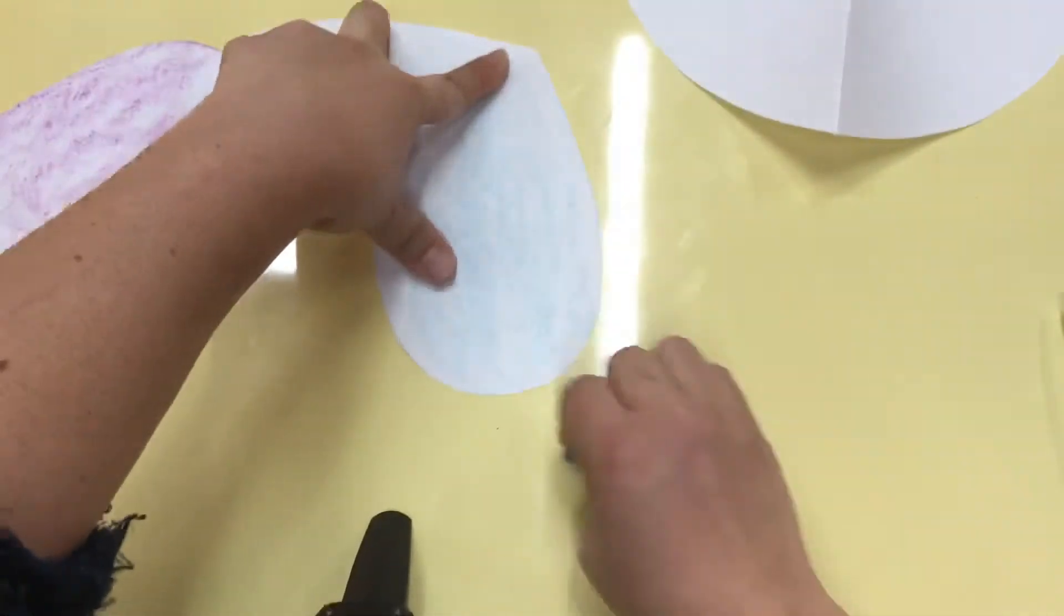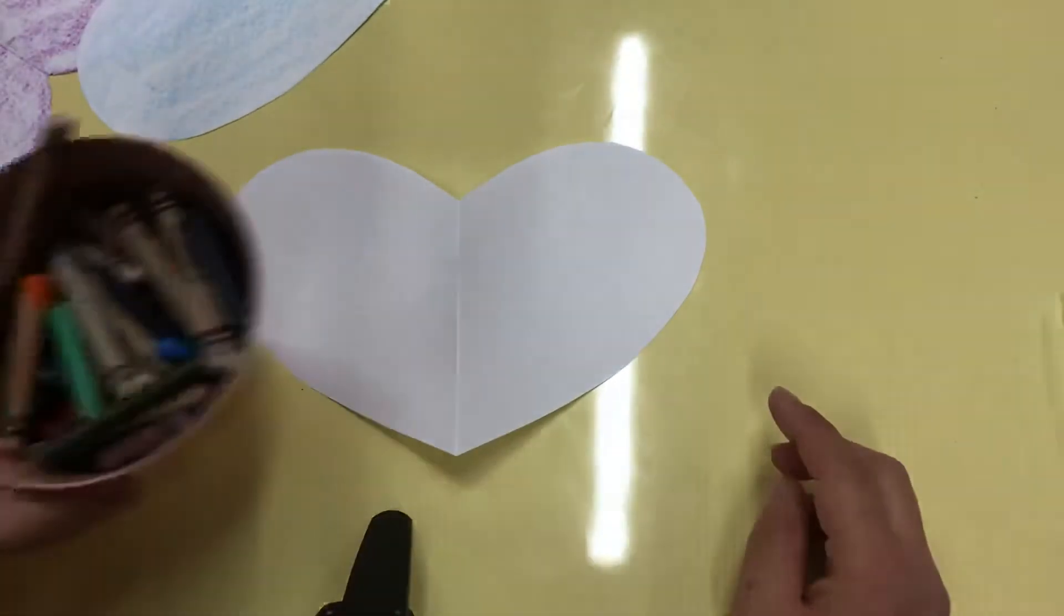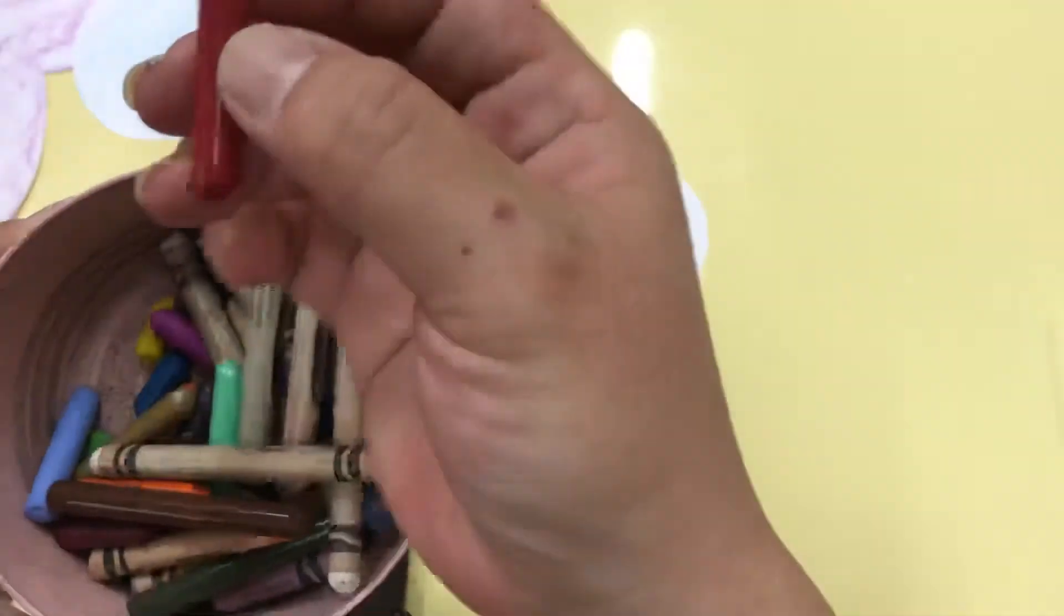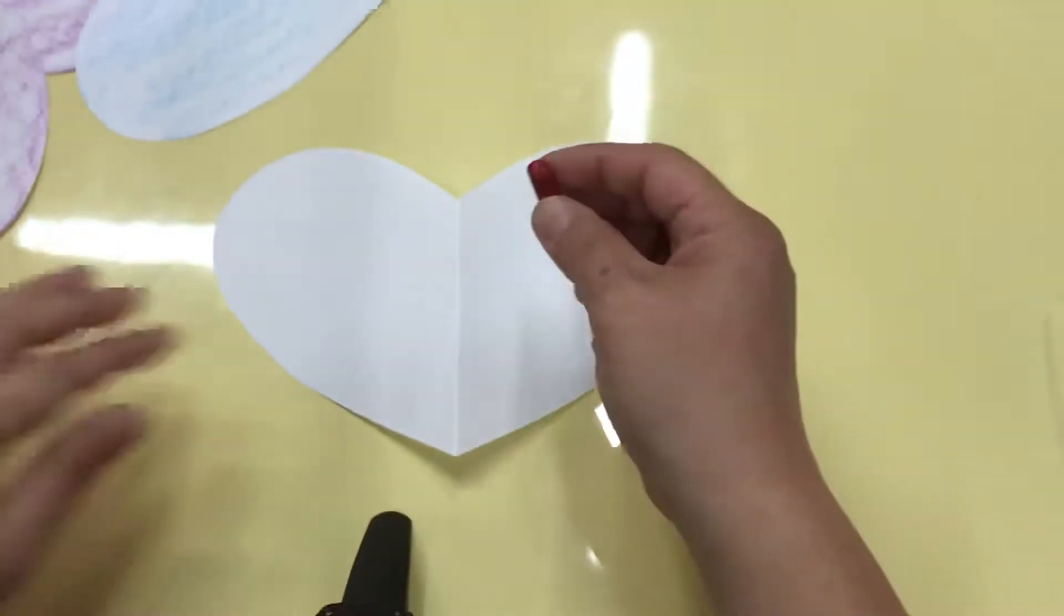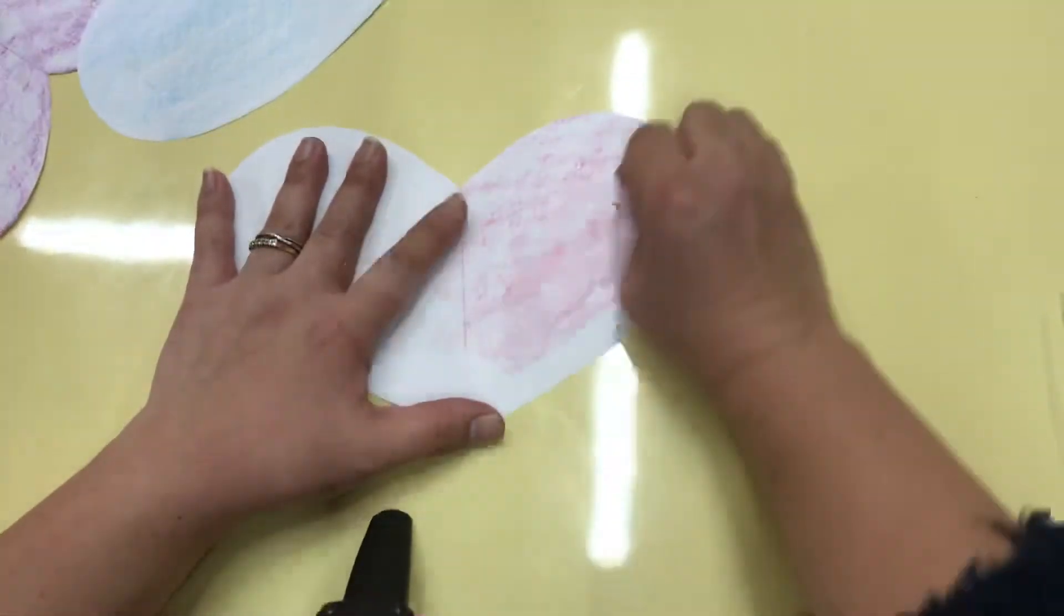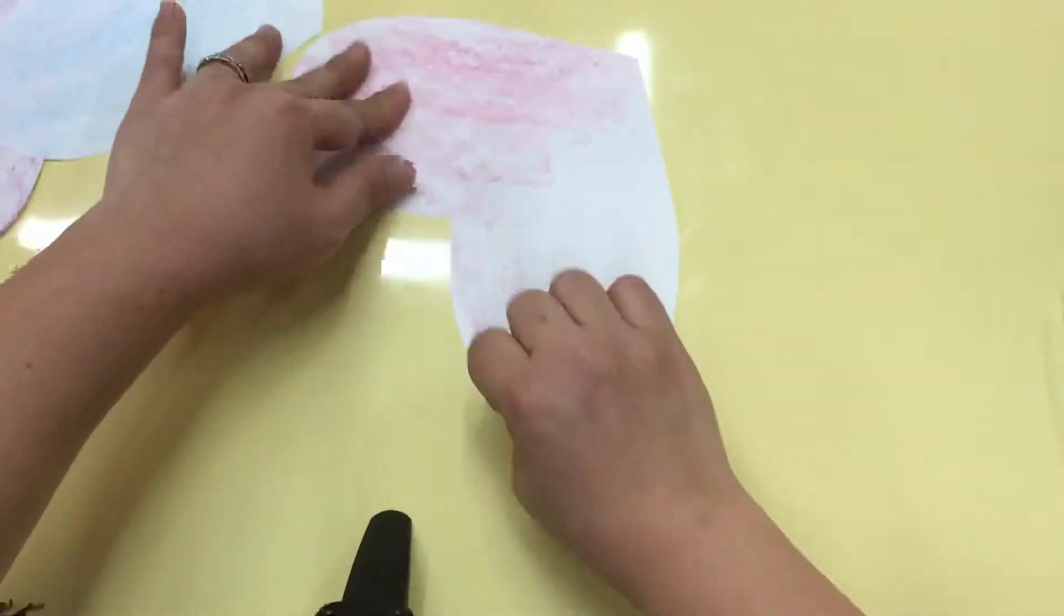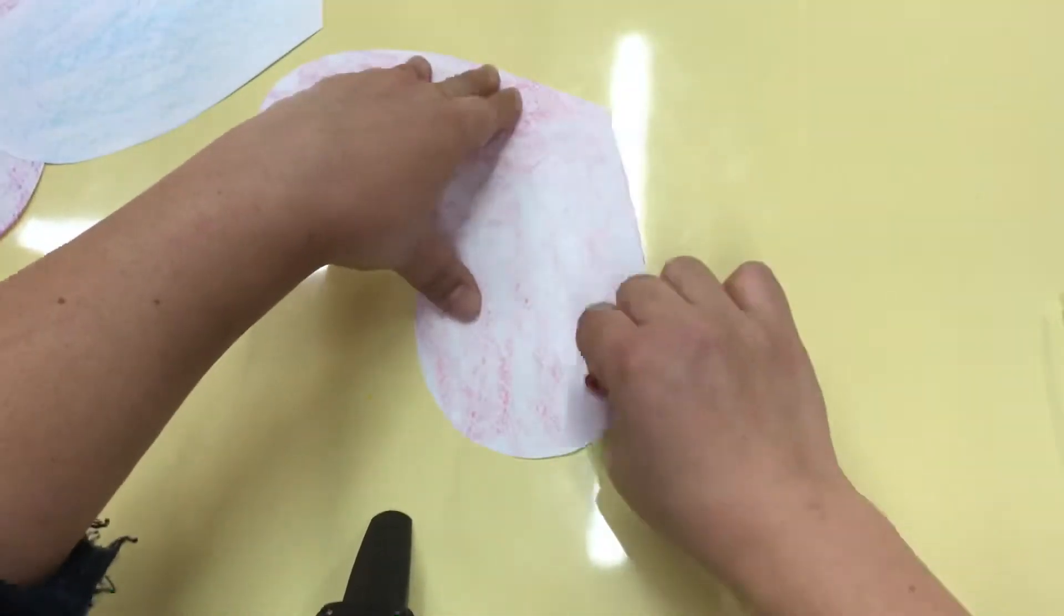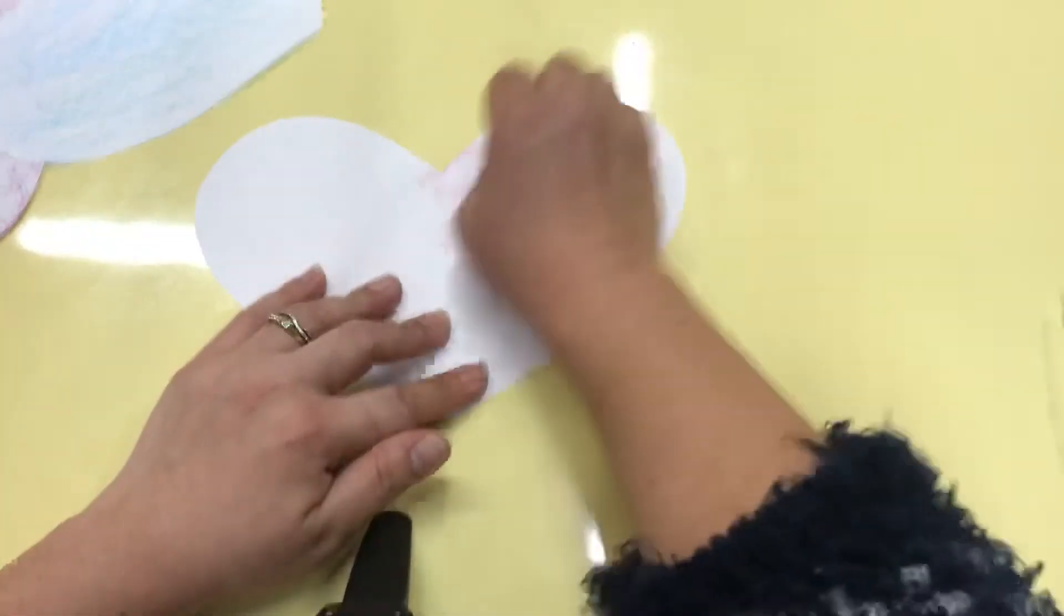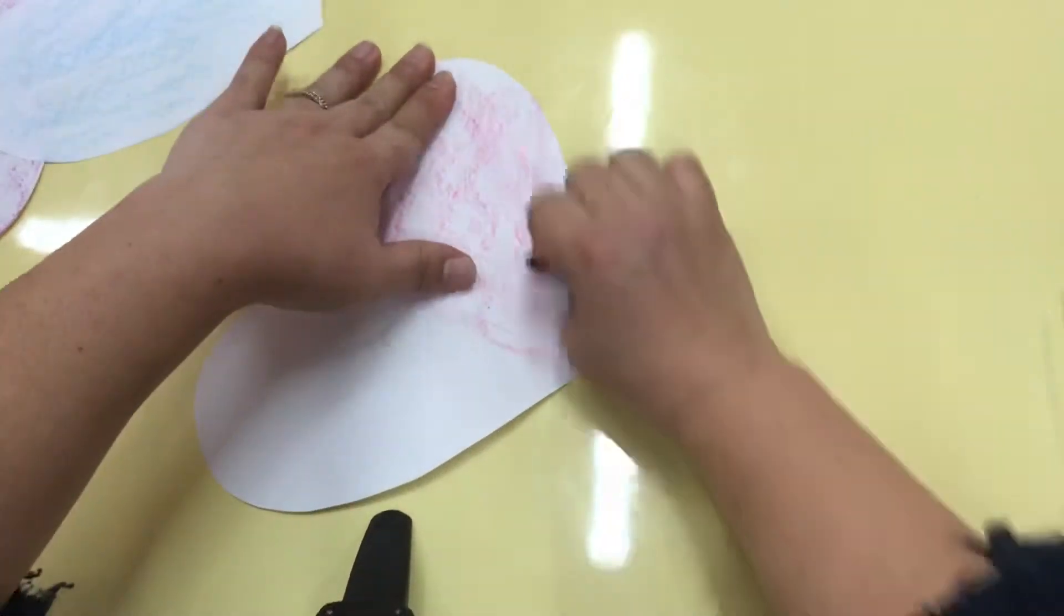Okay, so heart number two is finished. So let's go to heart number three. Let's see, what other crayons do I have? Oh, I think this is a nice one. Could be. Oh, very nice color. It's red, kind of pinkish red. Colors very nicely. Look.